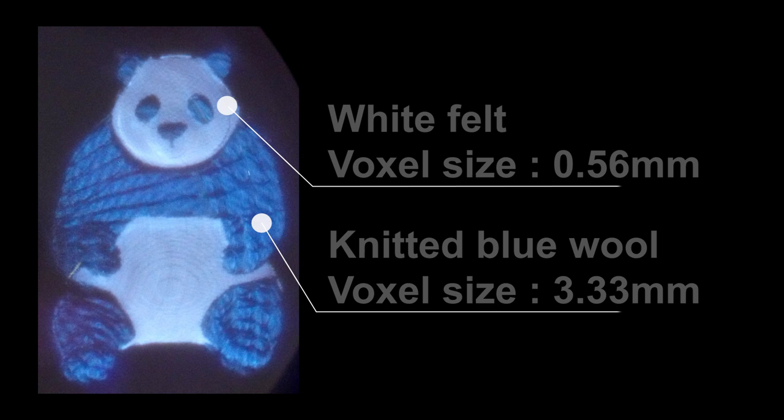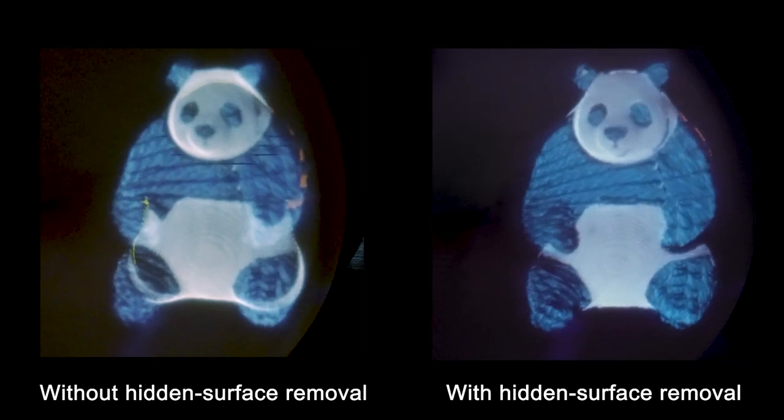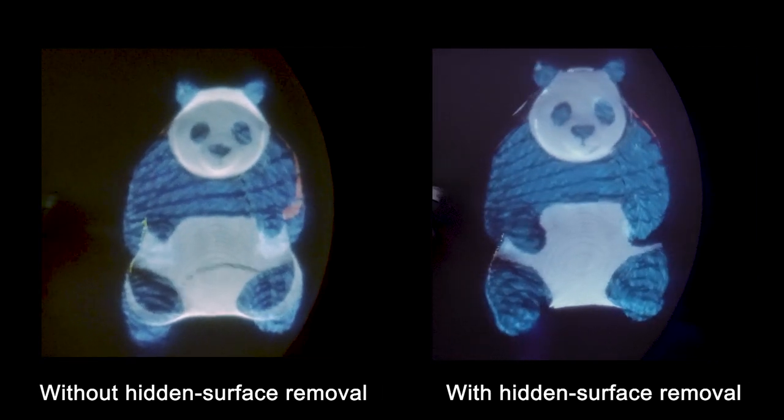Our system controls the voxel resolution adaptively for each material to retain its original texture appearance. Hidden surface removal is effective in presenting an image similar to a real object.